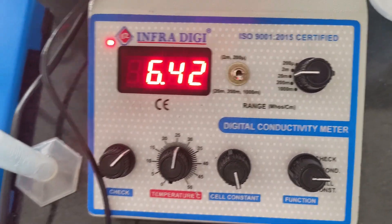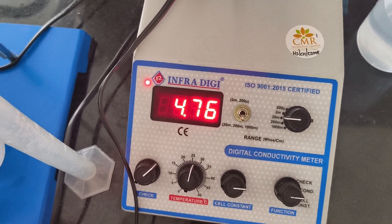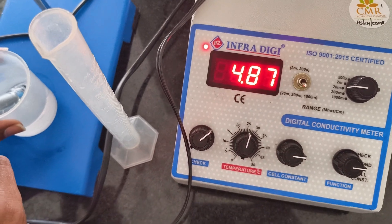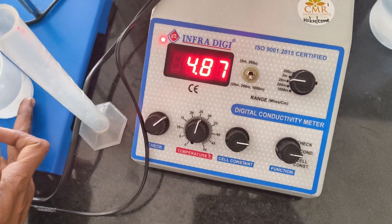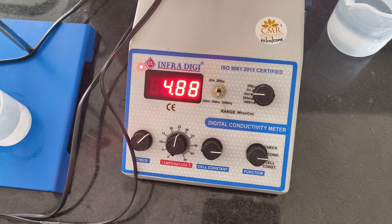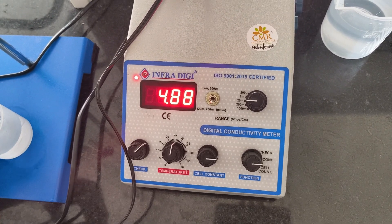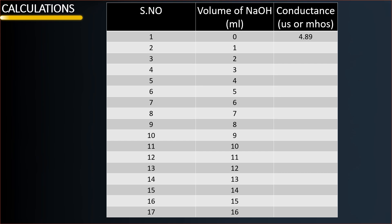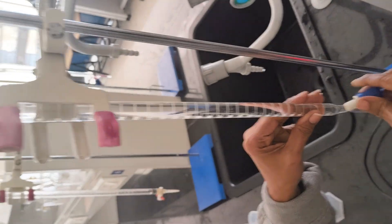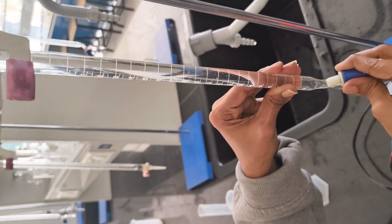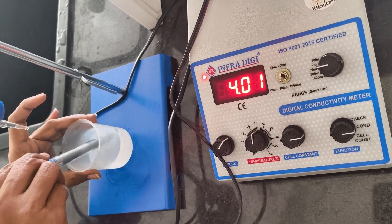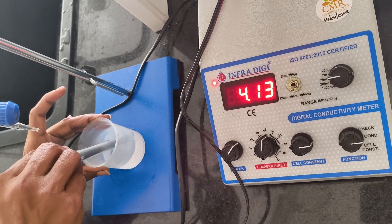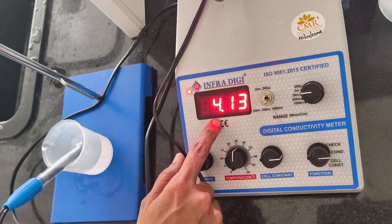The conductivity cell should be dipped into the HCl solution and conductance values noted from the digital conductivity meter. Since this is a strong acid HCl, you will get a high conductance value due to H⁺ ions. Then we have to add NaOH from the buret — fill the buret with NaOH up to the mark and add 1 ml of NaOH from the buret into the HCl solution. Dissolve it and note the change in the conductance value.